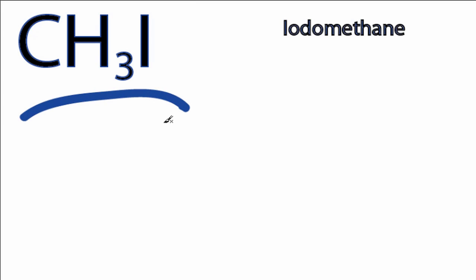This is the Lewis structure for CH3I. For CH3I we have a total of 14 valence electrons.